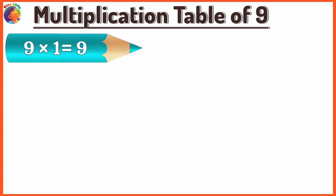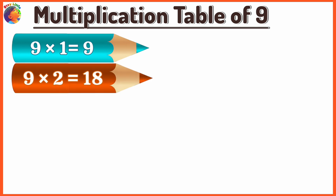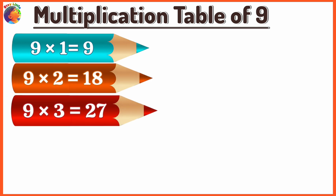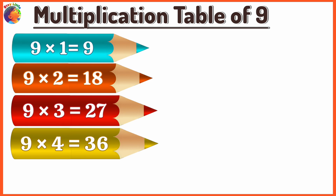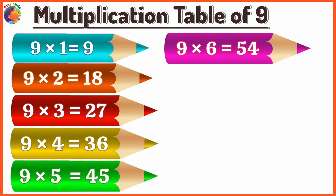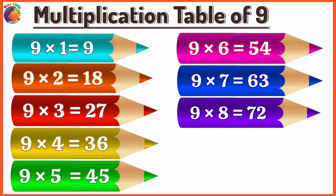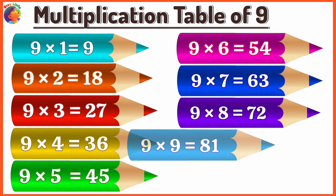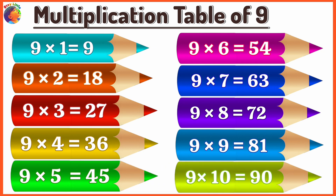9 x 1 is 9, 9 x 2 is 18, 9 x 3 is 27, 9 x 4 is 36, 9 x 5 is 45, 9 x 6 is 54, 9 x 7 is 63, 9 x 8 is 72, 9 x 9 is 81, 9 x 10 is 90.